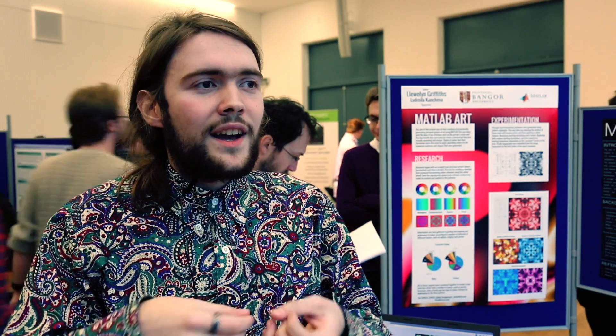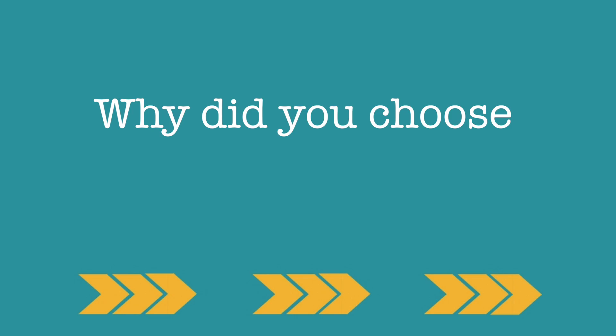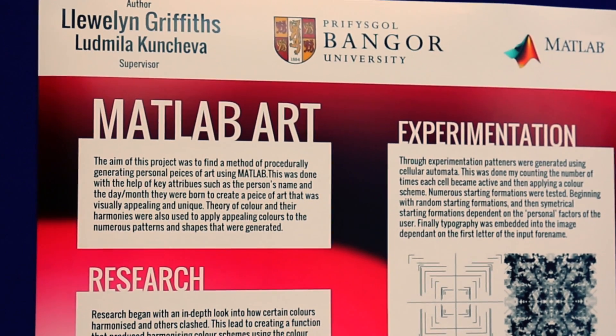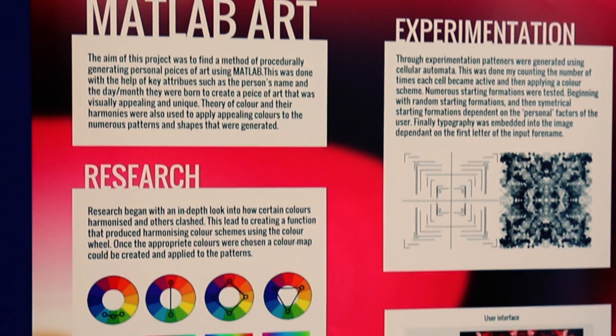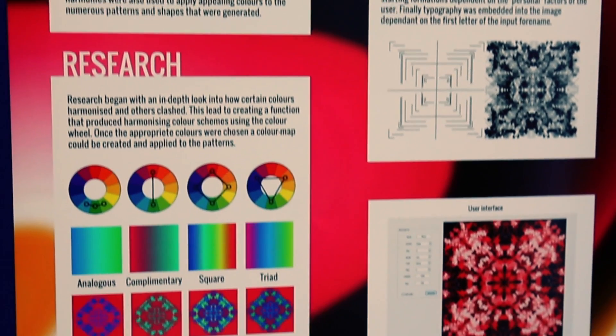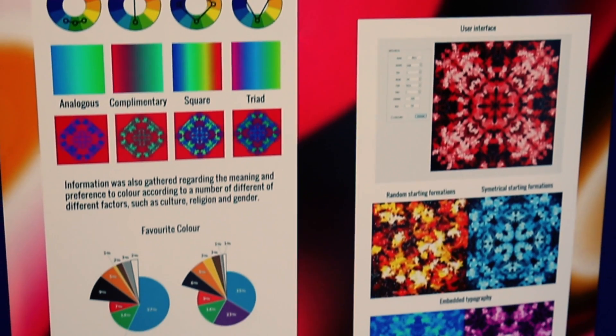I've used that model to create unique starting formations and then apply a colour scheme by counting all the times a cell was active. I'm into fractal art and different kinds of art, and it looked like a fun thing to do. My friend came up with the idea of a greeting card where you put in someone's birthday and name and it generates a unique card, so I thought I could apply the cellular automata model to that.